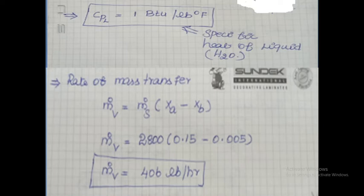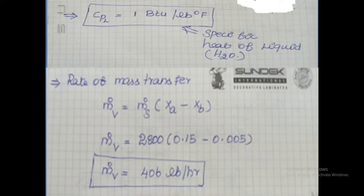The next parameter is rate of mass transfer. Rate of mass transfer M-dot-B is equal to M-dot-S into XA minus XB. M-dot-S is given data: 2800, which is the mass flow rate of solids. XA is given data: initial moisture content 0.15. XB is also given data: final moisture content 0.005. Both moisture contents are on a dry basis. Finally, we get M-dot-B equal to 406 pounds per hour.